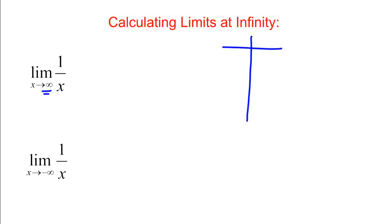If we do a little comparison here, when X is 10, 1 over X is a tenth. If X is a hundred, it's a one hundredth. If X is a thousand, we get one thousandth. If X is a million, we get one millionth.